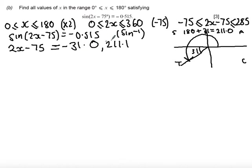If I subtract 360 degrees from either of these, it's going to fall outside the range. If I add 360 degrees to either, it will also fall outside the range. So at this point, I've got all the solutions needed.